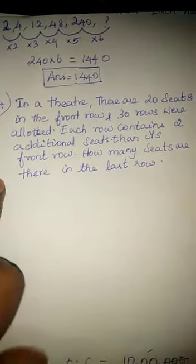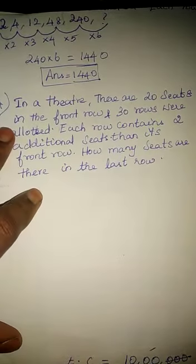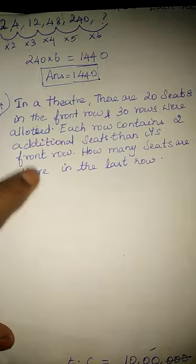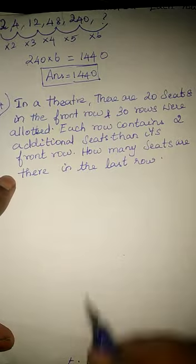Again I am reading the question. In a theatre there are 20 seats in the front row and 30 rows were allotted, each row contains two additional seats then its first row. How many seats are there in the last row?